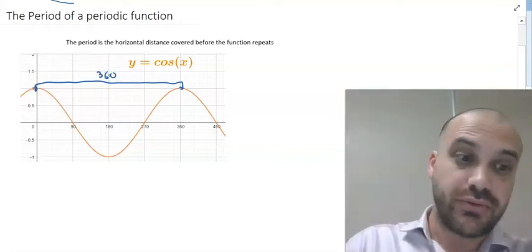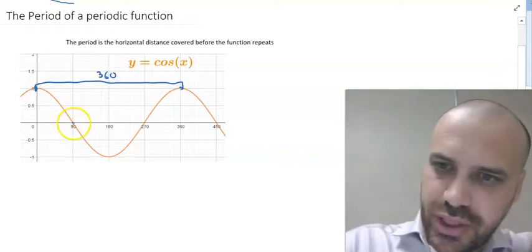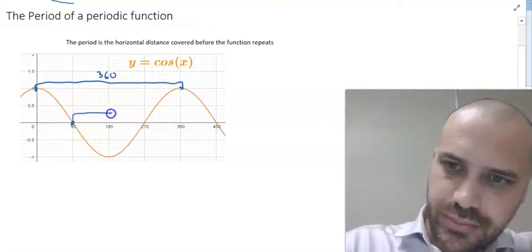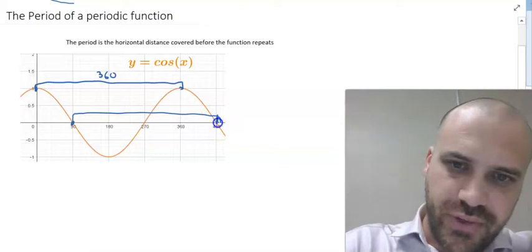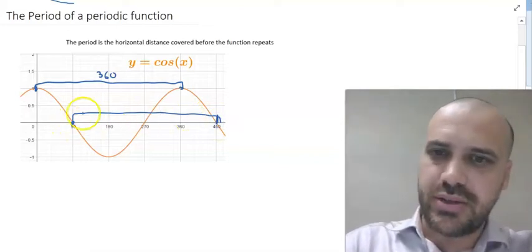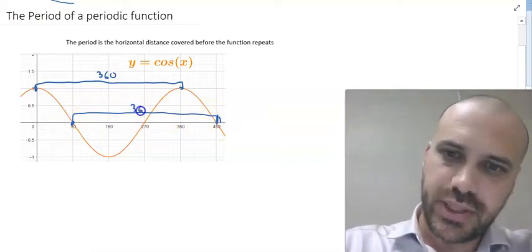I could draw this in a different way. I could draw it from this point to this point, and we can see from 450 to 90, the distance there is 360.